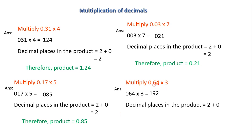The first number has two decimal places; the second number has none, so I write 2 plus 0, which equals 2. Now I convert 192 to two decimal places: 1 is the first digit, 9 is the second, and the point comes between 1 and 9. Hence the product is 1.92. This is how we find the product of decimal numbers.